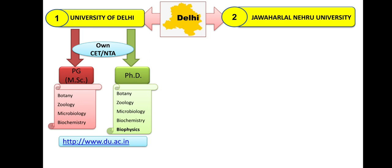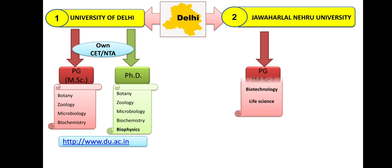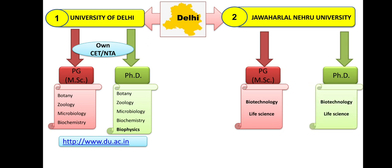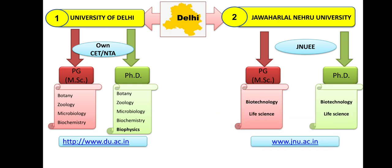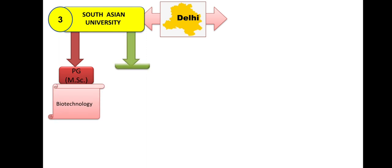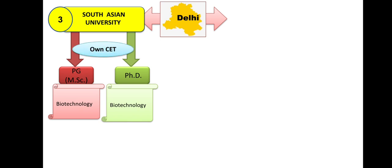Second university in Delhi is Jawaharlal Nehru University (JNU) — a very famous university. They are having MSc in Biotechnology and Life Science, and PhD in Biotechnology and Life Science only. JNU has its own entrance — JNU EE, that is Jawaharlal Nehru University Entrance Examination. So if you are interested in doing MSc or PhD in Biotech, you can go to JNU. Third Delhi university is South Asian University: MSc in Biotechnology and PhD also in only Biotechnology. Admission will be through their own entrance examination.